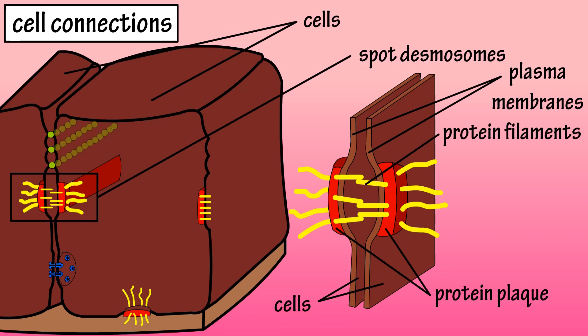Inside each of the cells, intermediate filaments, which are part of the cell cytoskeleton, anchor to the protein plaque. This cell connection arrangement provides support to the cells.